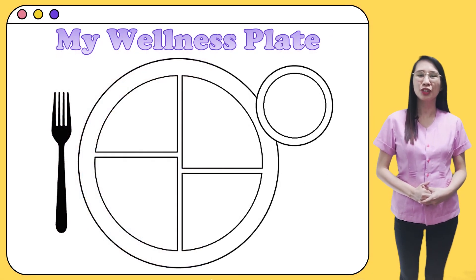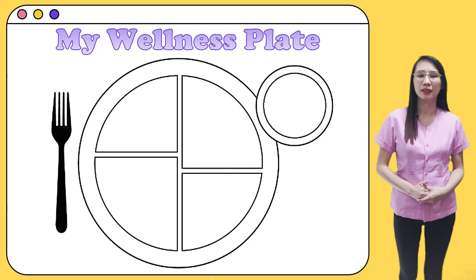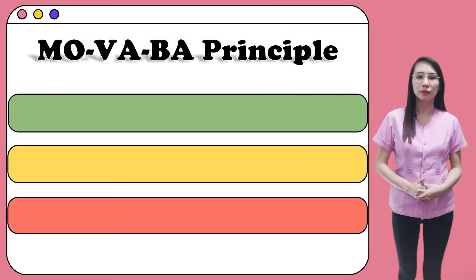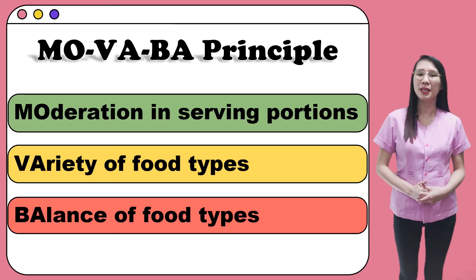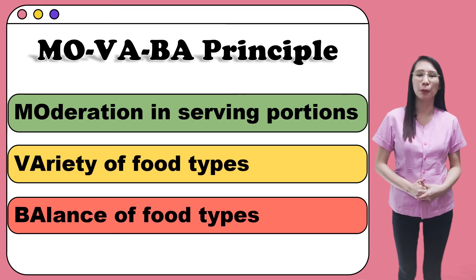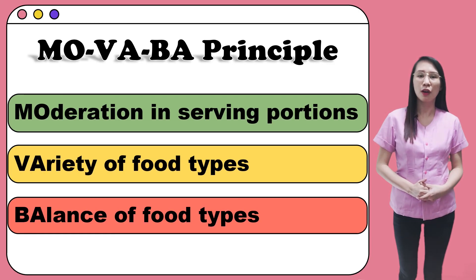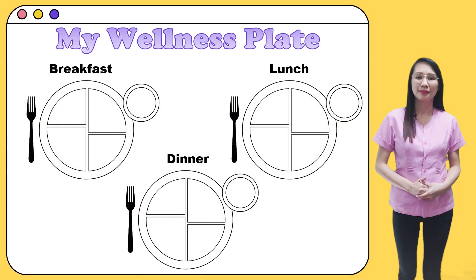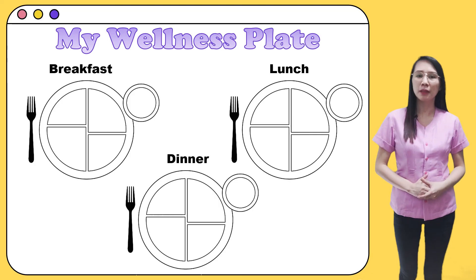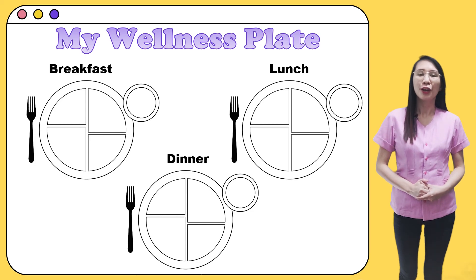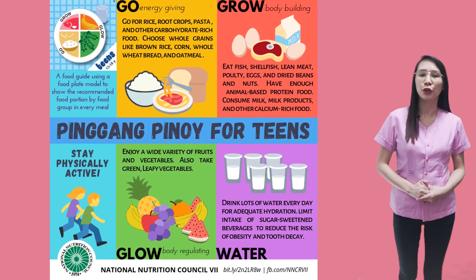You will now try to build your own wellness plate. Make your own by applying the MOVABA principle — which means moderation in serving portions, variety of food types, and balance of food types. Make one wellness plate meal plan for your breakfast, lunch, and dinner. For your food choices, you may refer to the given food examples from the Pinggang Pinoy for teens.